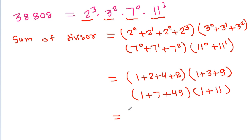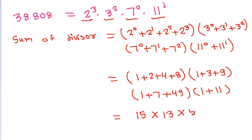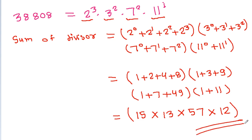And it is equal to: 1 plus 2 is 3, plus 4 is 7, plus 8 is 15, into 1 plus 3 is 4, plus 9 is 13, into 1 plus 7 is 8, plus 49 is 57, into 1 plus 11 is 12. So that is the value of the sum of divisors.